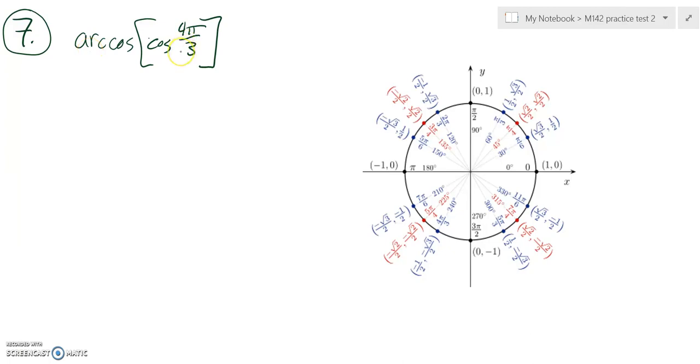4 pi over 3. Remember, arc cosine is that inverse cosine. It's the thing that undoes cosine.